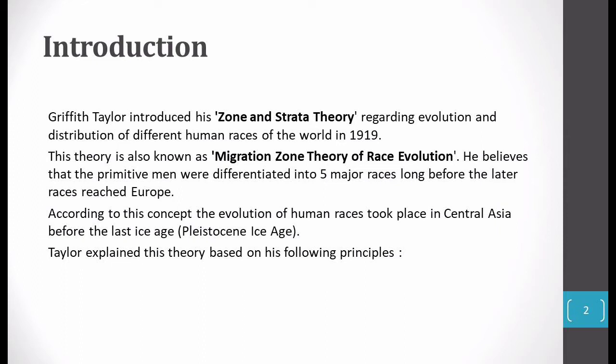The human race evolution started in Central Asia. When the last ice age happened — the Pleistocene Ice Age — every European race evolution had occurred. And when they gave the Zone and Strata Theory, they gave their basic principles, which we will discuss first.